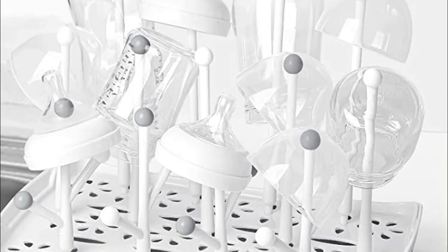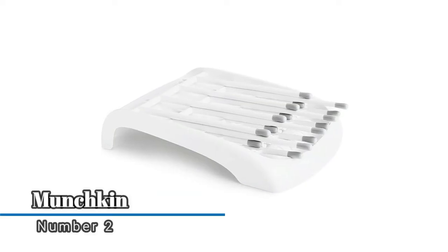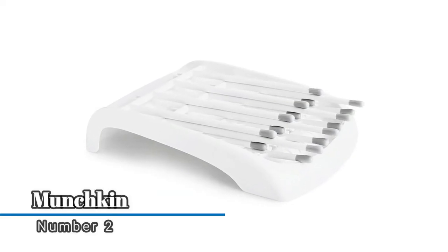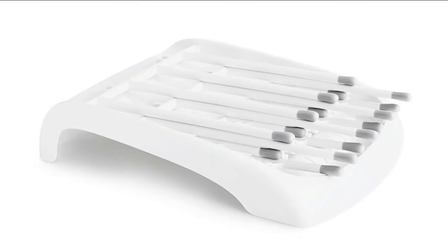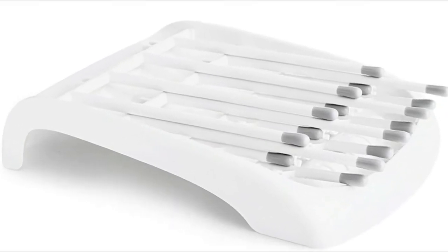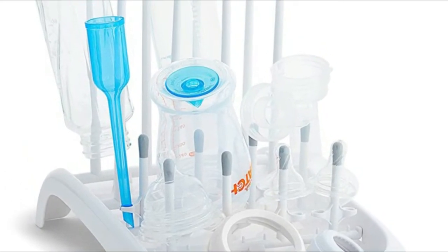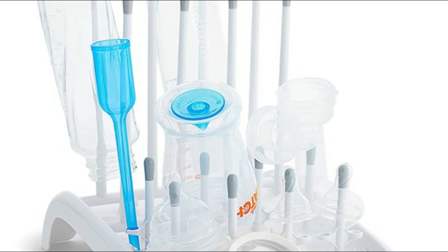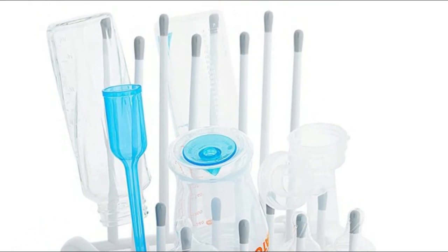Number two, Munchkin. Ideal for bottles, nipples, cups, pump parts, and accessories. Reservoir collects excess water to keep countertops dry. Posts keep straws upright for thorough drying. Top rack dishwasher safe.